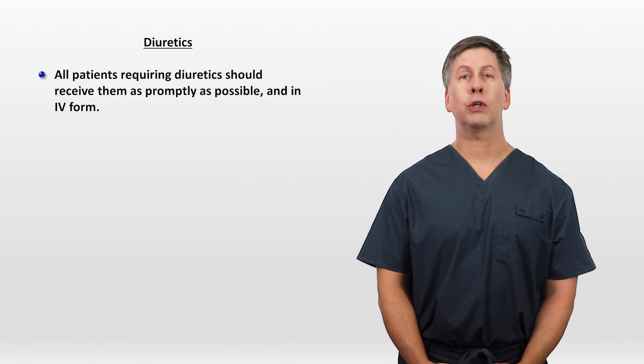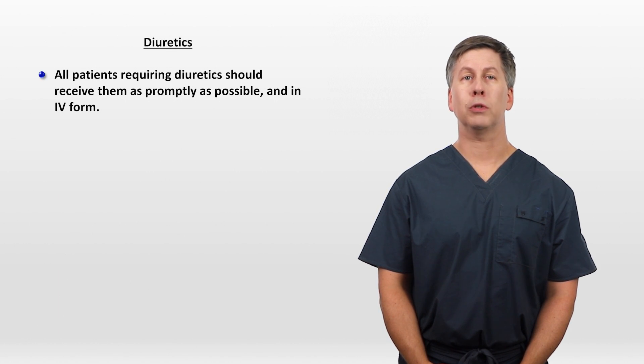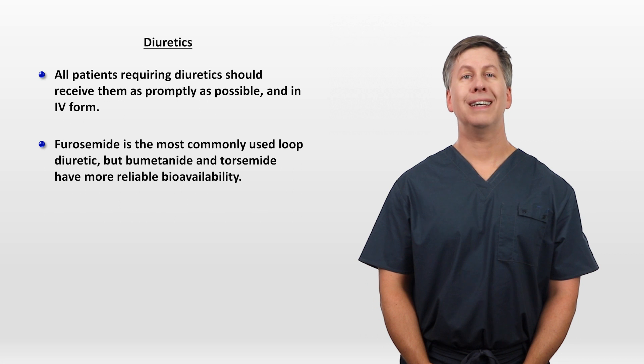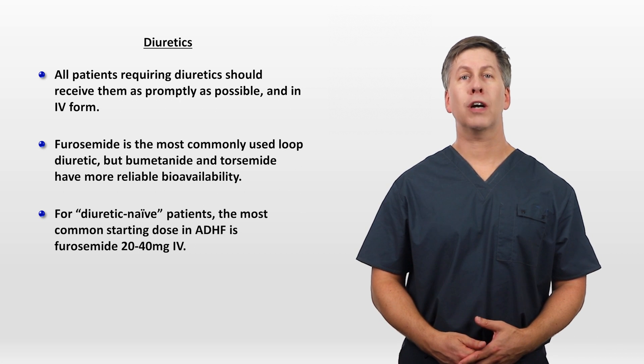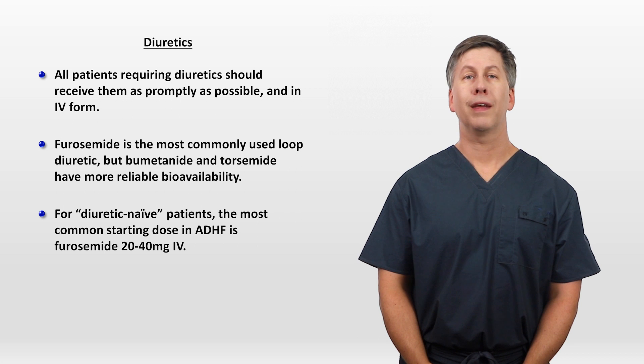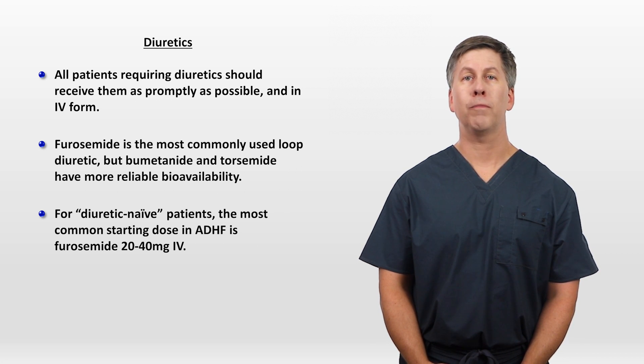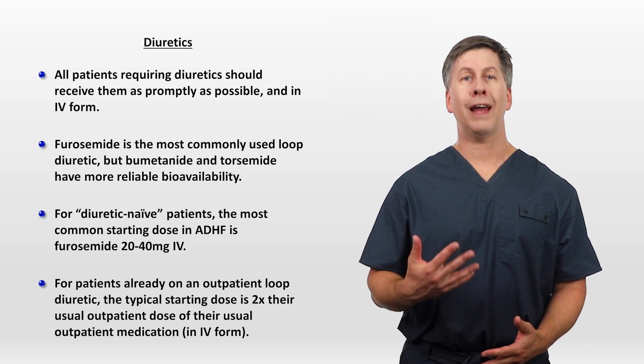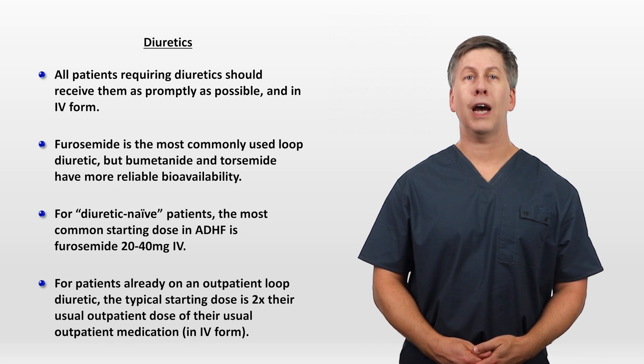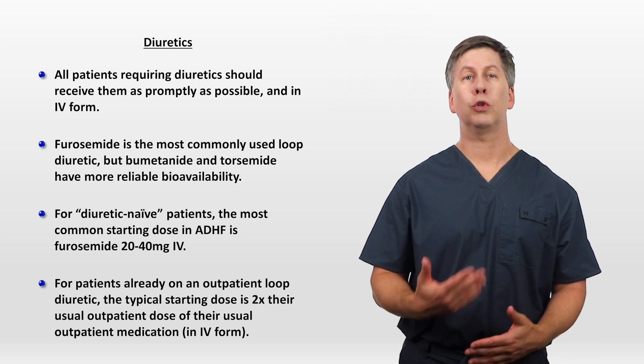Let's talk diuretics. All patients requiring diuretics should receive them as promptly as possible, and in IV form. Furosemide, also known as Lasix, is the most commonly used loop diuretic, but Bumetanide, marketed as Bumex, and Torsemide have more reliable bioavailability. For diuretic-naive patients, the most common starting dose in acute decompensated heart failure is furosemide 20-40 mg IV, though patients with renal impairment often require higher doses. For patients already on an outpatient loop diuretic, the typical starting dose after presenting with an acute exacerbation is twice their usual outpatient dose of their usual outpatient medication.